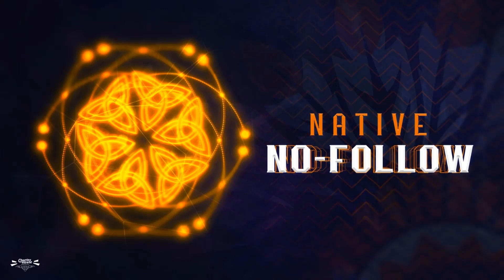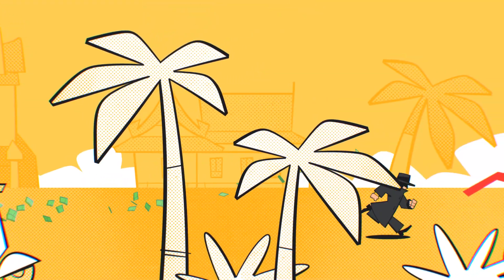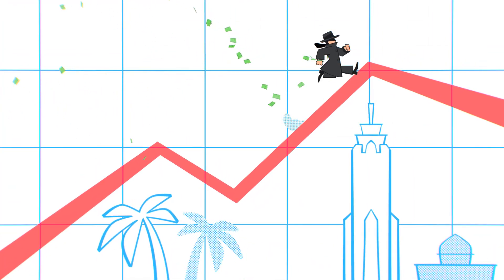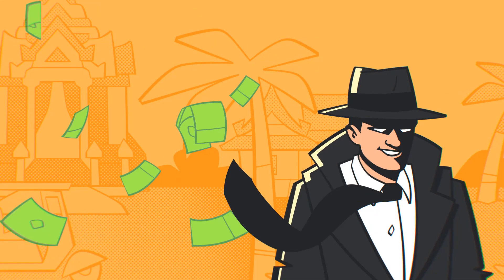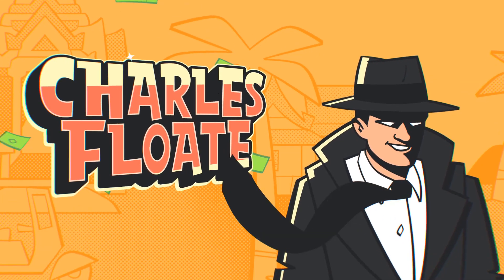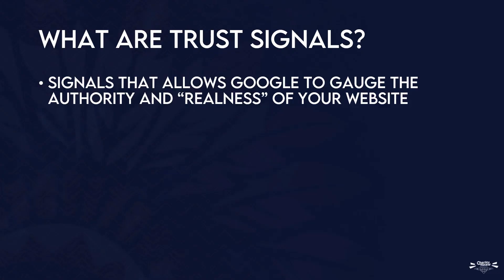Let's jump into things. Starting off with trust signals — what exactly are trust signals? Essentially, trust signals are anything that allows Google to gauge the authority and the realness of your website. Any kind of signal that Google looks to in order to validate the authenticity of your website.